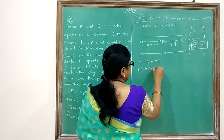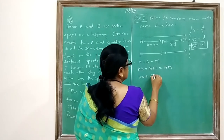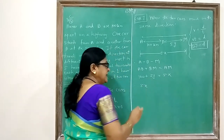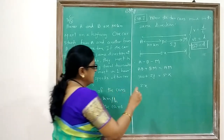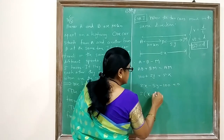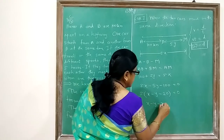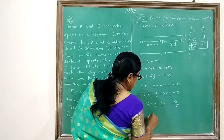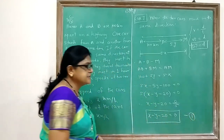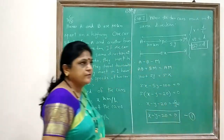Therefore: AB + BM = AM, which gives 100 + 5y = 5x. Rearranging: 5x − 5y − 100 = 0. Dividing by 5: x − y − 20 = 0. This is your first equation.